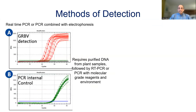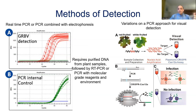The current methods for detection have been based on real-time PCR or PCR combined with electrophoresis. These require purified DNA from plant samples to be isolated, followed by RT-PCR or PCR with molecular grade reagents, done in a lab environment. There have been efforts to make these PCR-based detection methods more field deployable. For example, researchers are using the plasmon effect between gold nanoparticles and CRISPR-Cas to enable visual detection, but it still requires isolation of DNA and amplification, done by PCR or other isothermal amplification processes.